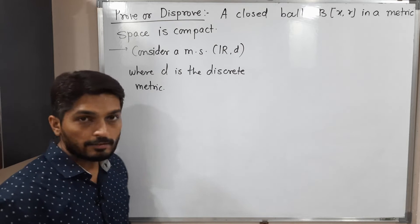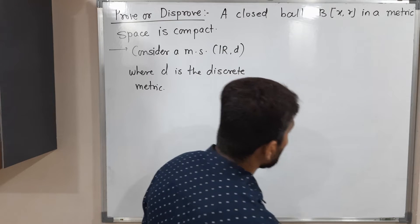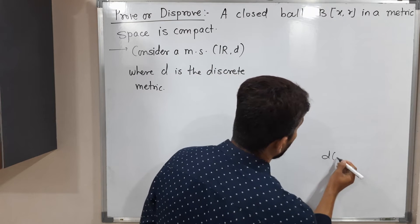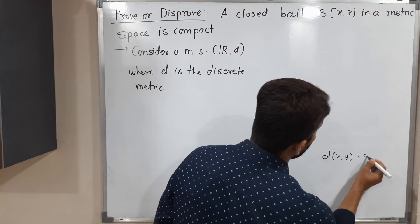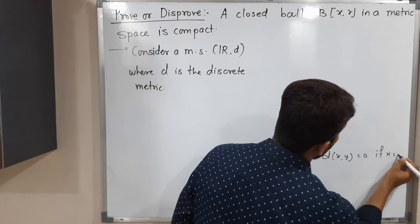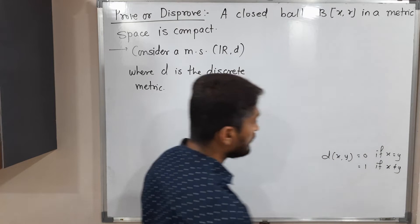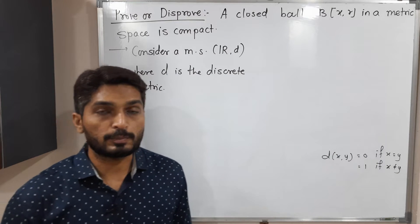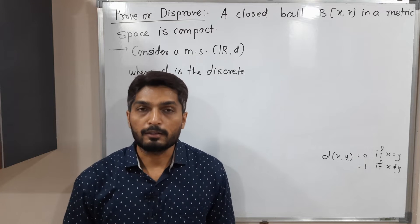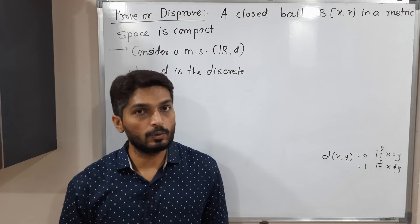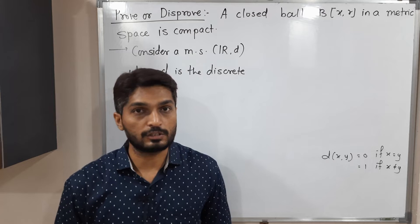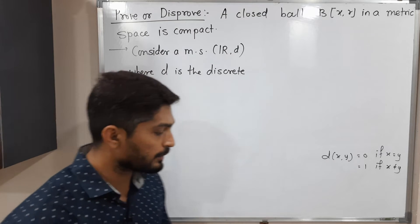Let me write here the definition: d(x,y) equals 0 if x equals y, and it equals 1 if x is not equal to y. So in a discrete metric space there are only two distances: 0 and 1. If points are the same, the distance is 0; if points are distinct, the distance is 1.